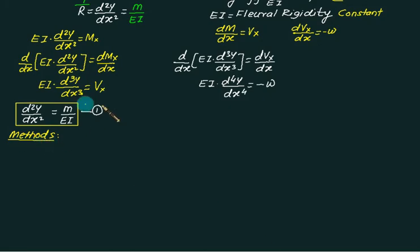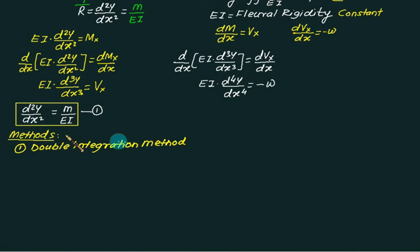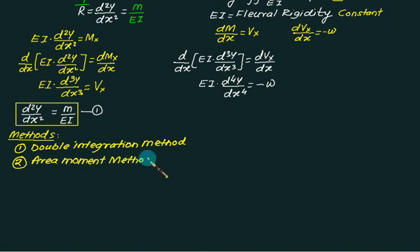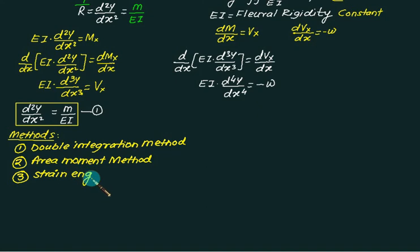There are various methods available for finding deflection. The double integration method requires developing the bending moment equation, then integrating twice with constants C1 and C2 — it is a lengthy method. The second popular method is the area moment method, also called Mohr's method, where we use the area of the bending moment diagram. The third method is the strain energy method, also called Castigliano's theorem, which is used for complex problems and is more advanced.